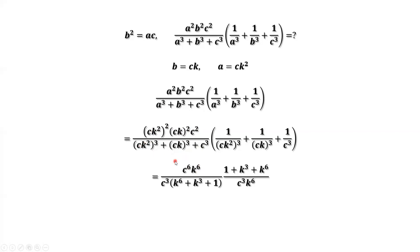In the denominator of the first part, we have c to the power of 3 in each item. Therefore, we can factor c to the power of 3 out. Then we have k to the power of 2 times 3, which is 6, k to the power of 3, and then 1. Let's check the second part. The common denominator is c to the power of 3 times k to the power of 3. Therefore, we have 1 plus k to the power of 3 plus k to the power of 6 in the numerator.